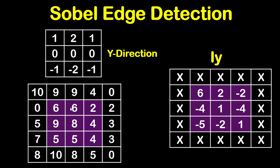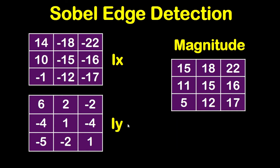We do the same steps for all pixels in the highlighted region to complete Iy. Now after getting Ix and Iy, we compute the magnitude matrix. For example: √(14² + 6²) ≈ 15, √((-18)² + 2²) ≈ 18, √((-22)² + (-2)²) ≈ 22, and √(10² + (-4)²) ≈ 11, and so on for the other pixels.